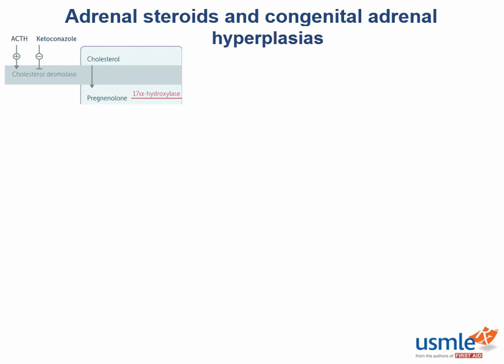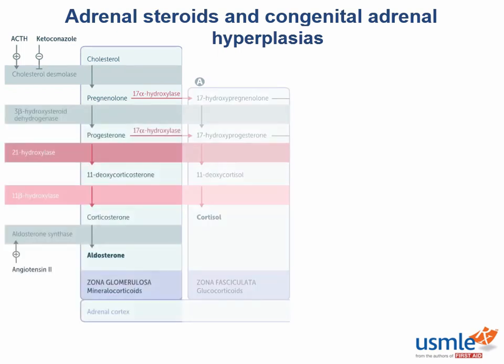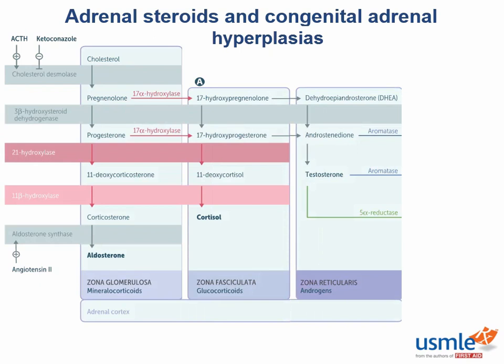What are the three layers of the adrenal cortex in order from outside to inside? You should really know this one. The three layers — the glomerulosa, fasciculata, and reticularis — synthesize different steroids, and it's all dependent on a set of what I call the gateway enzymes.